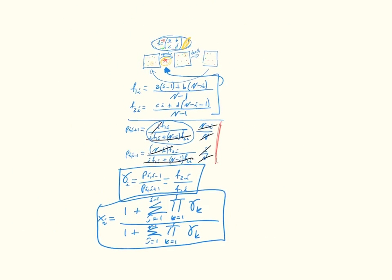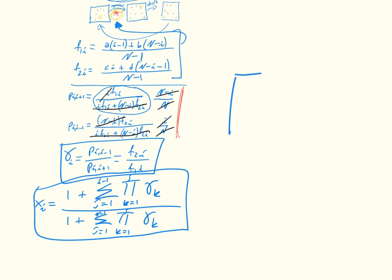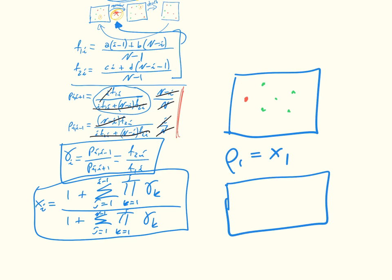Going back to the idea of red being individuals of the first type: if we have one individual of the first type trying to invade, the fixation probability is rho one, which is just X1. If instead we have one individual of the second type trying to invade a population of the first type, that's rho two, equal to one minus X(N−1), since X(N−1) is the probability of the first-type individuals taking over. That is the general Moran process on a game.